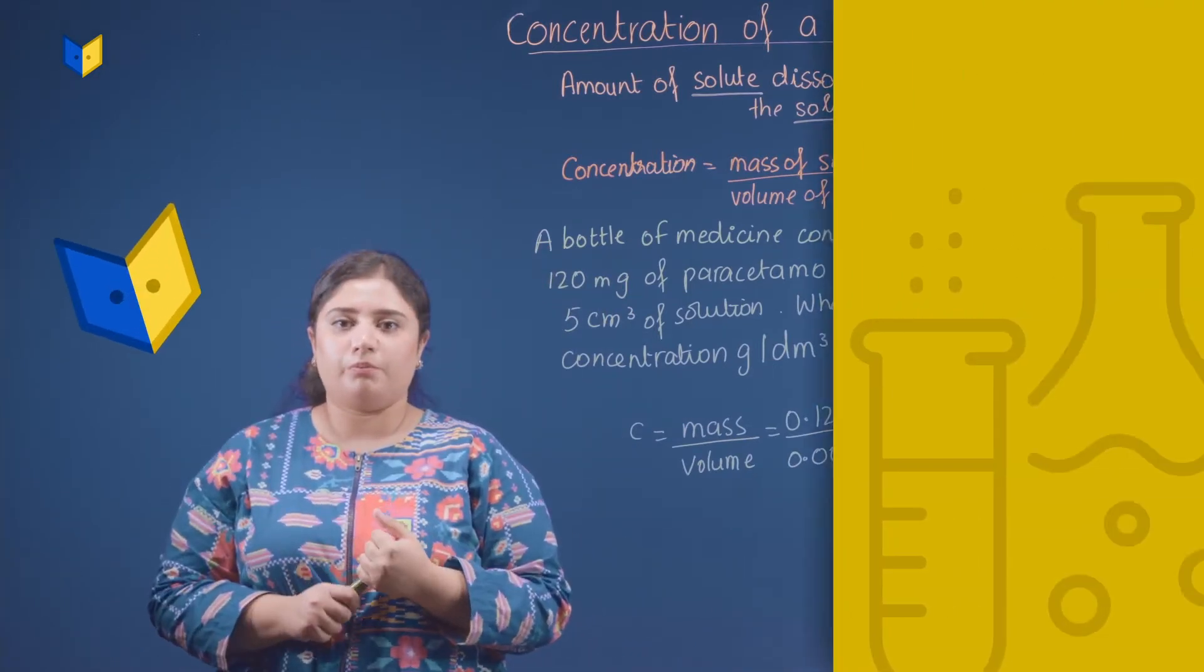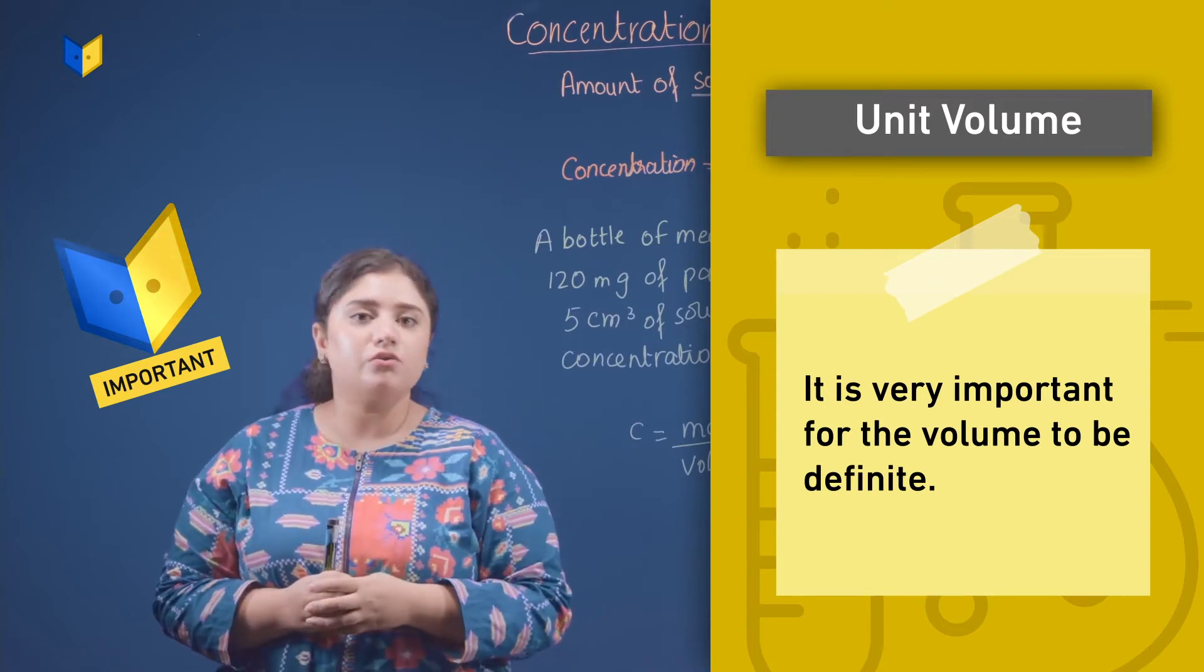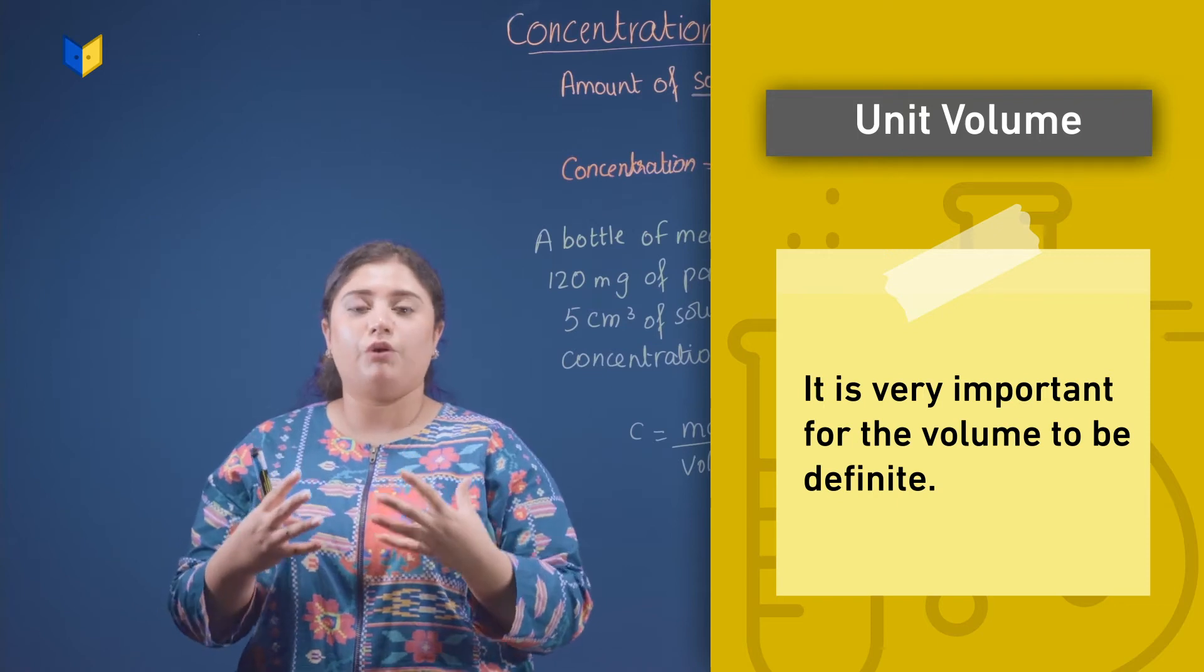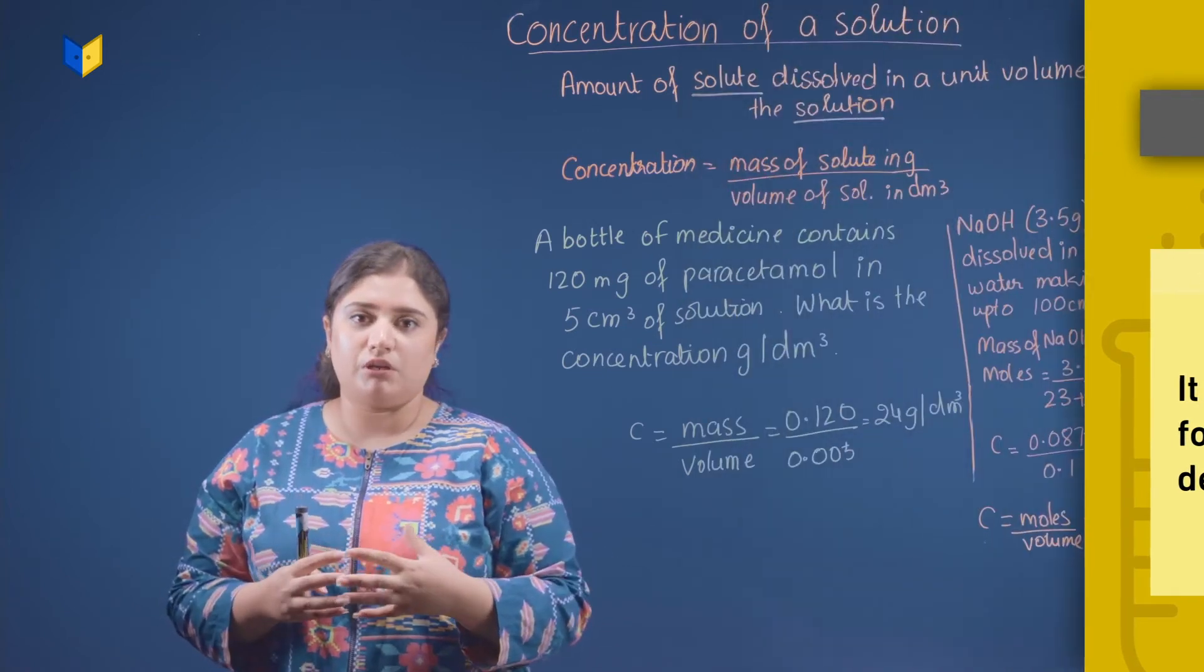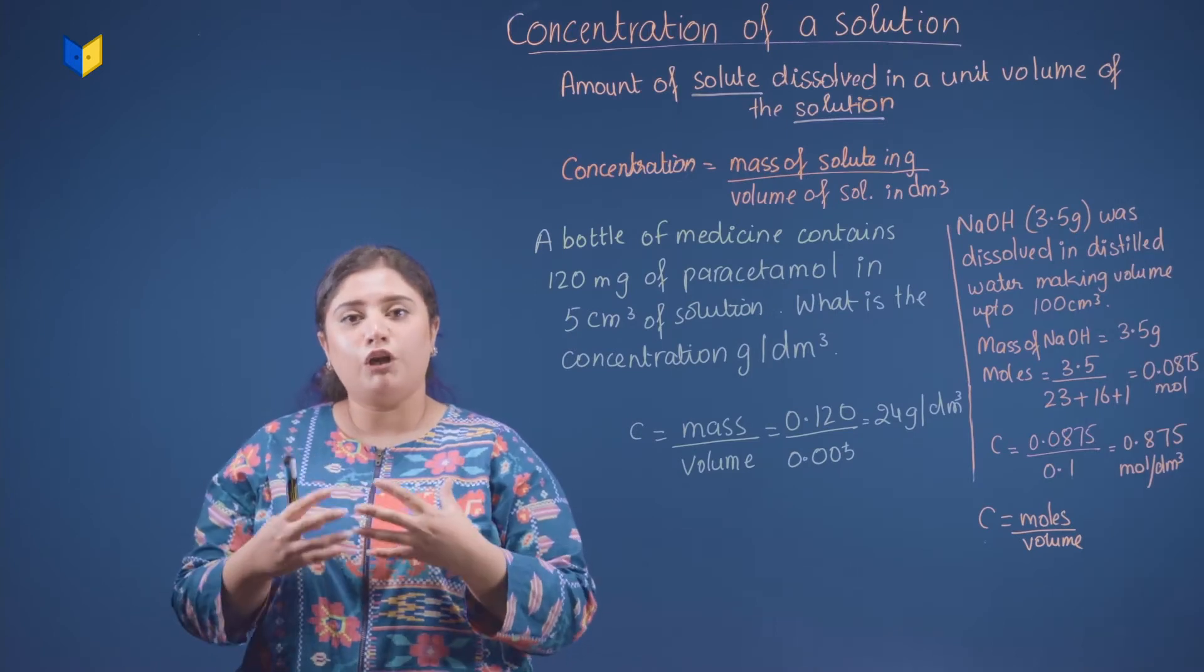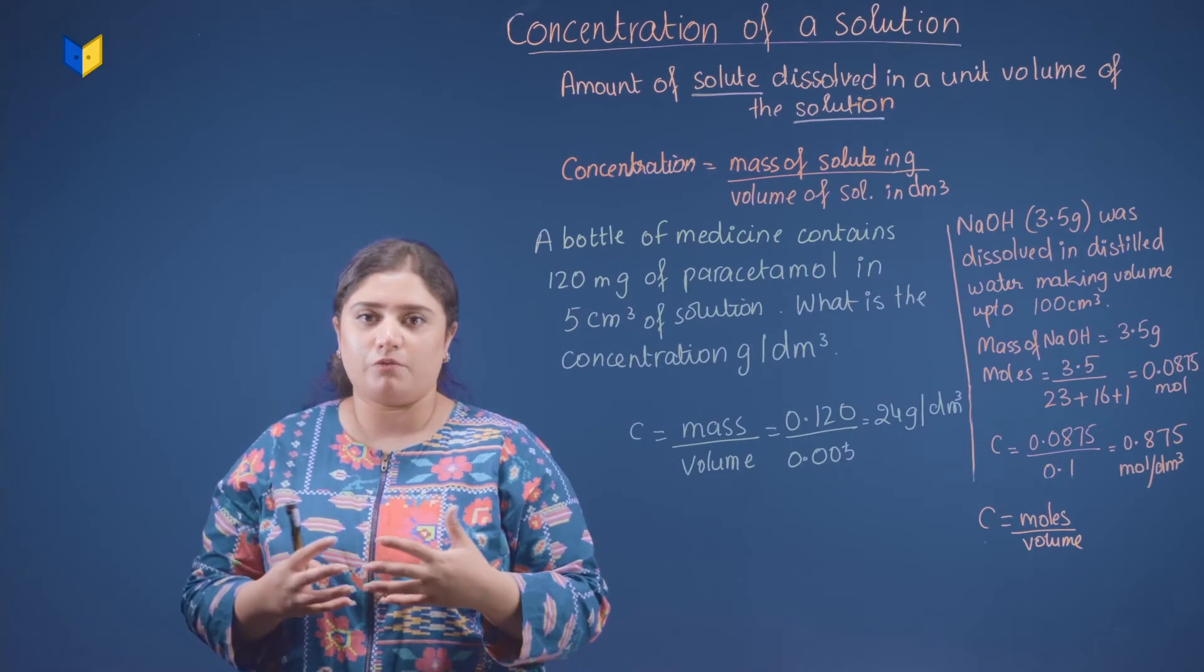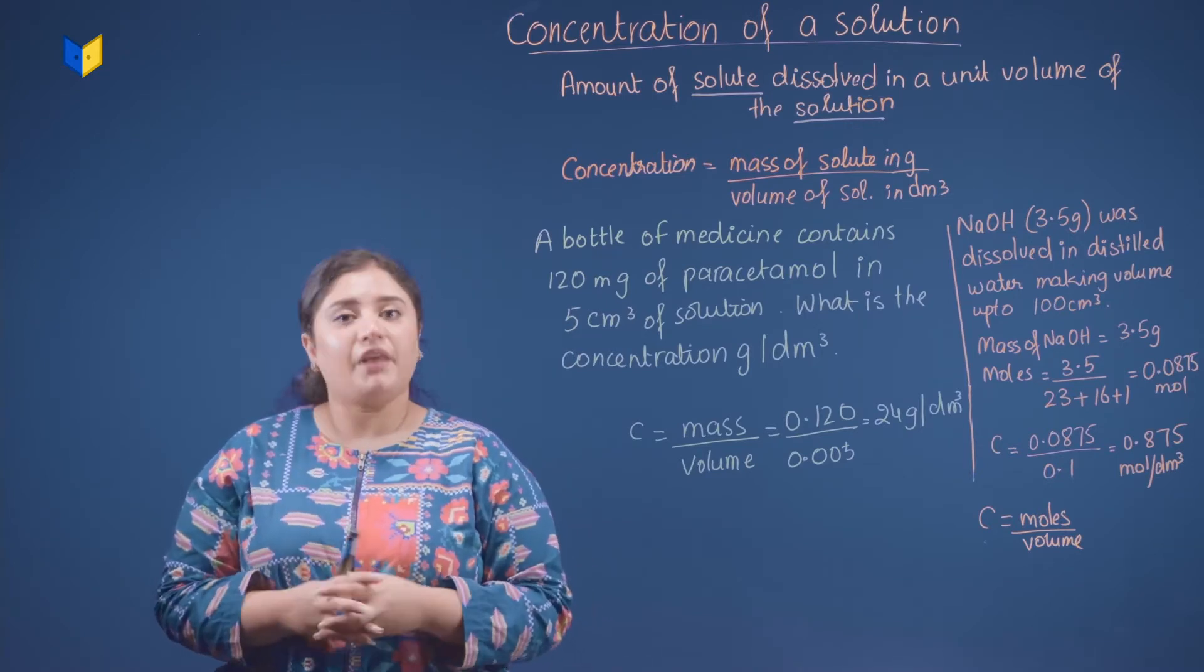Now you must be thinking, why a unit volume? It is very important for the volume to be definite. You can't just take whatever amount of water you want and then put sugar into it and make a solution. No, that's not possible. It's very important for the volume of the solvent to be definite for a solution to be formed. So you must have a definite volume.